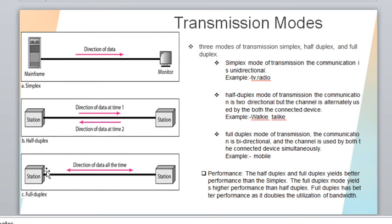In full duplex mode, communication happens in both directions simultaneously — it is bi-directional — and the channel is used by both devices at the same time. For example, communication through a mobile phone. Considering performance, full duplex has better performance because communication happens simultaneously, meaning the utilization of bandwidth is double compared to half duplex and simplex.